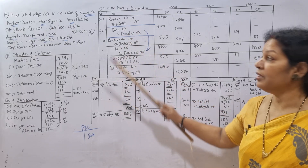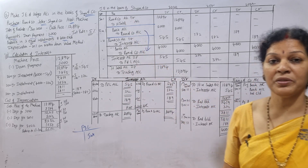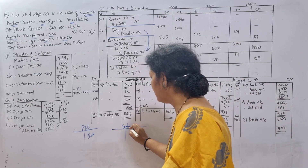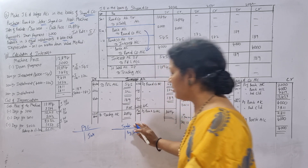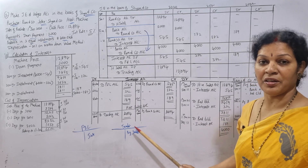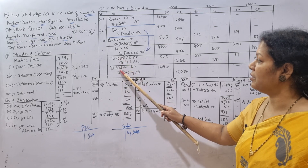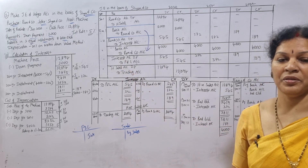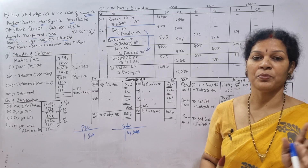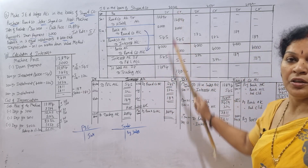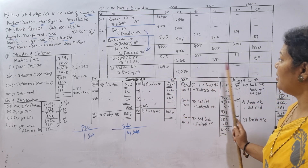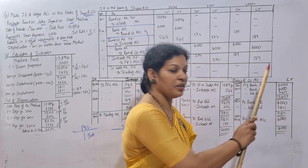Sixth entry: sales must also be transferred. Sales always go to the Trading account on the credit side, written as 'By Sales.' The entry is: Higher Sales account debit to Trading account. Narration: being sales transferred to the Trading account. This entry comes only in the first year, 2020, because the sale happened only once — second and third year have no sales entry.